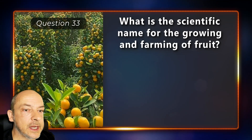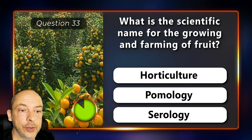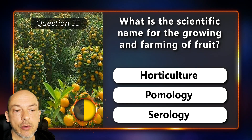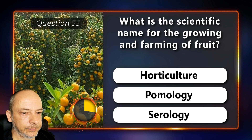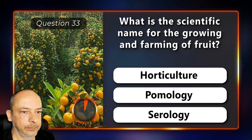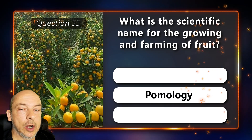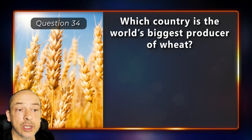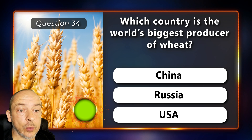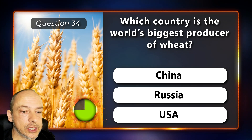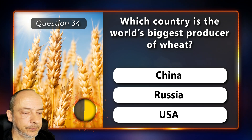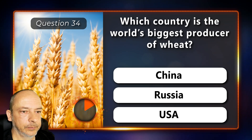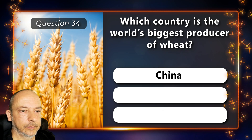What is the scientific name for the growing and farming of fruit — water culture, pomology, or serology? It's called pomology. Which country is the world's biggest producer of wheat — is it China, Russia, or the USA? It's China.